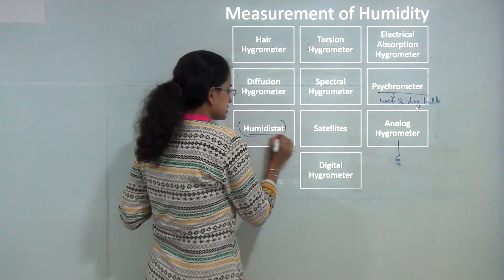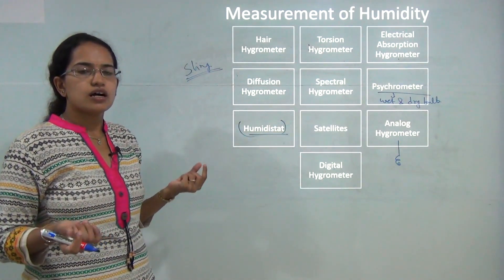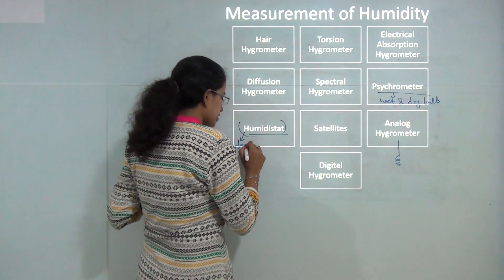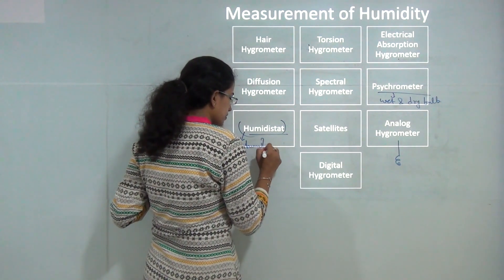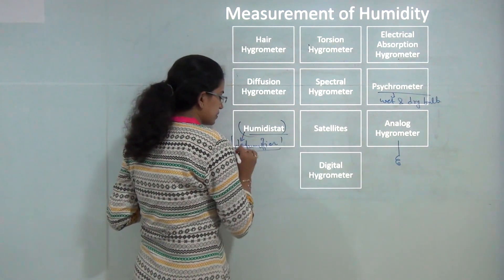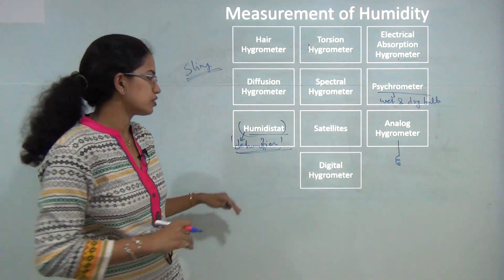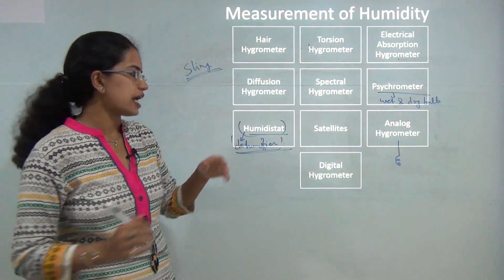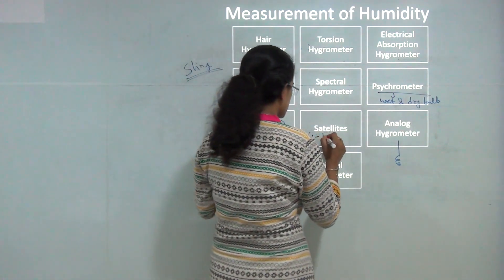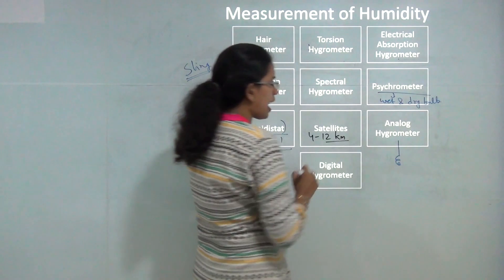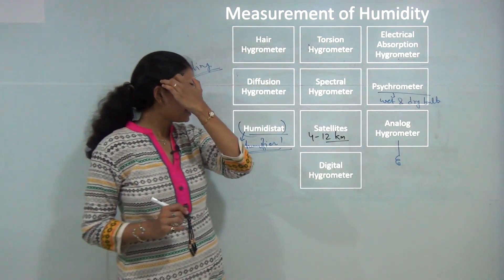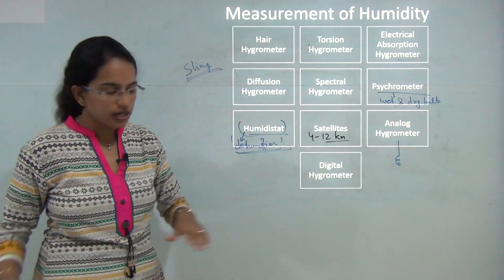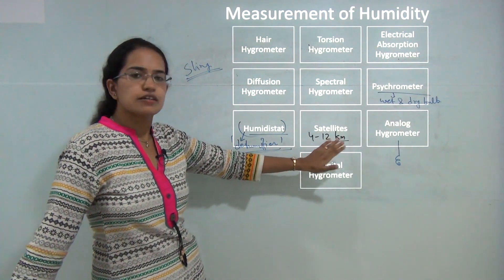A humidistat acts as a controller for humidity and sets the maximum limit for dehumidifiers — it sets how much humidity is the maximum allowed. Satellites can also measure humidity, explaining the water vapor concentration at around 4 to 12 kilometers altitude, measured by infrared sensors.